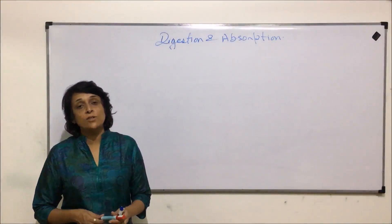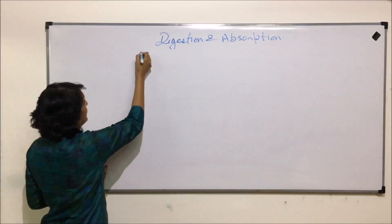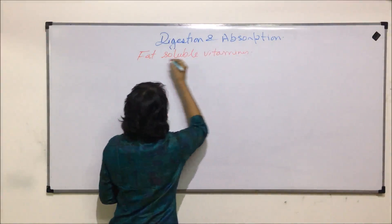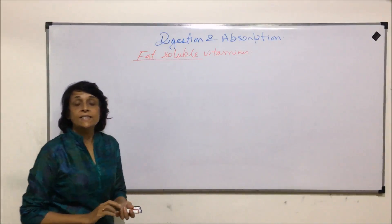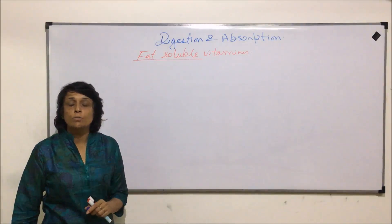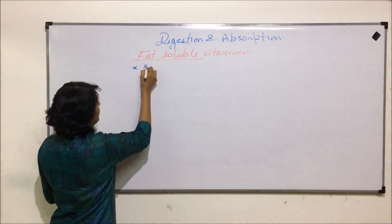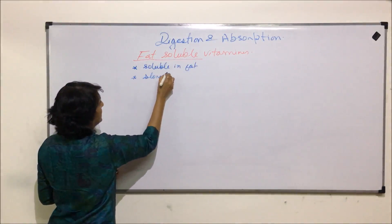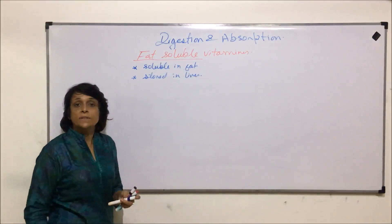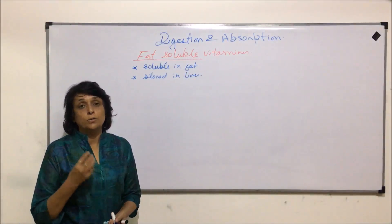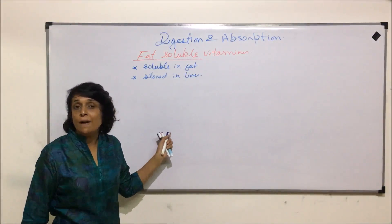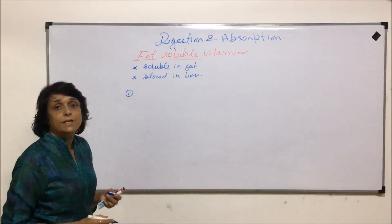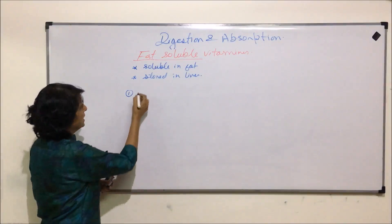We will be discussing fat-soluble vitamins. As the name indicates, they are soluble in fat and all these fat-soluble vitamins are stored in the liver. We will be talking about three main things: the name of the vitamin, its technical name, its functions, and deficiency symptoms. The fat-soluble vitamins are A, D, E, and K.